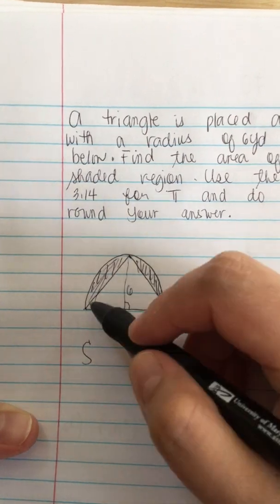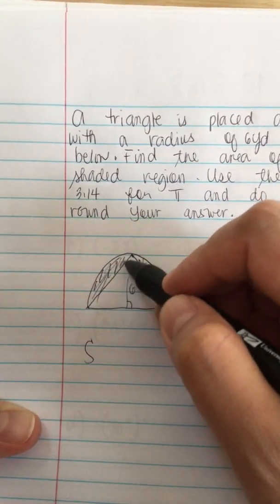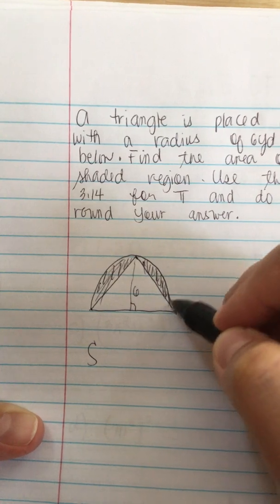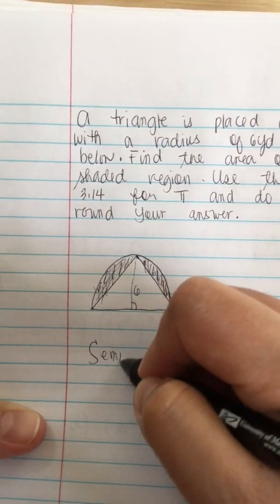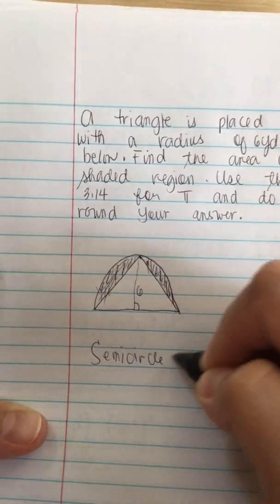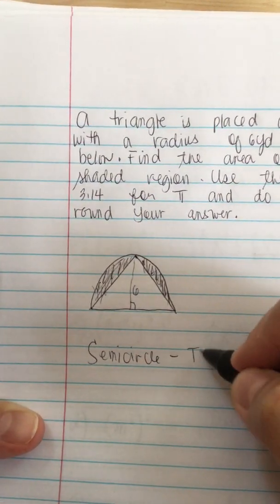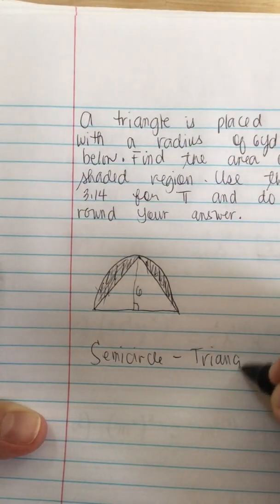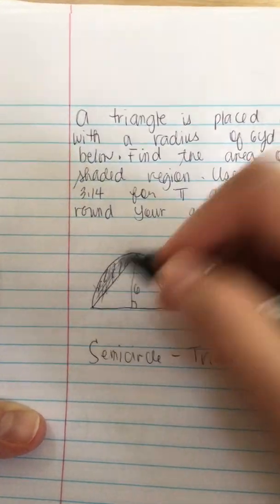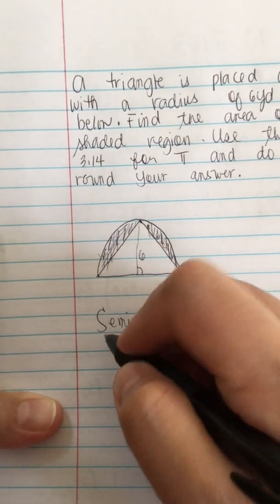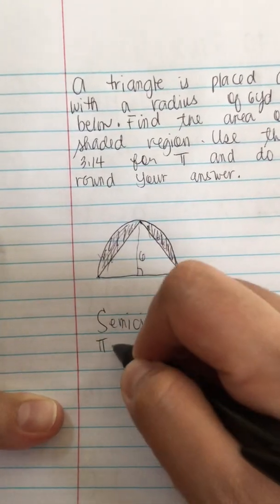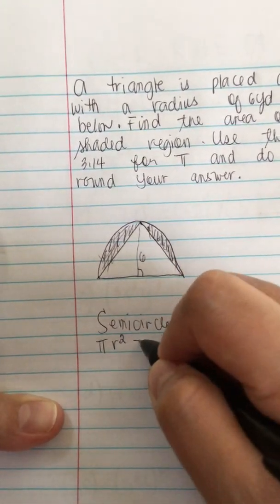The circle minus the triangle inside will give us the area of the shaded region. So the semicircle minus the triangle will give us this area.